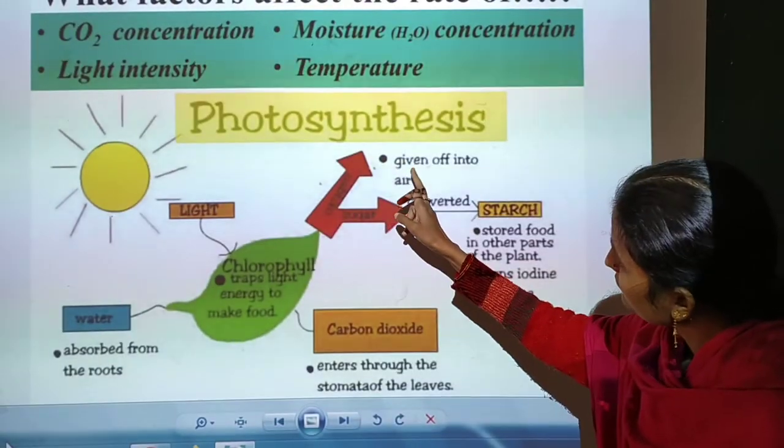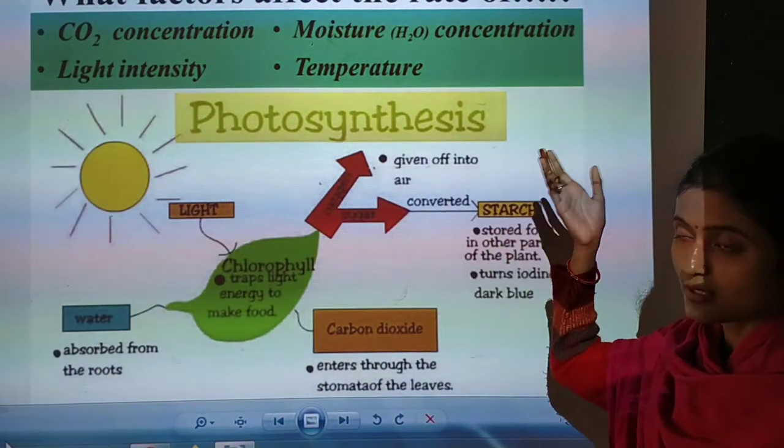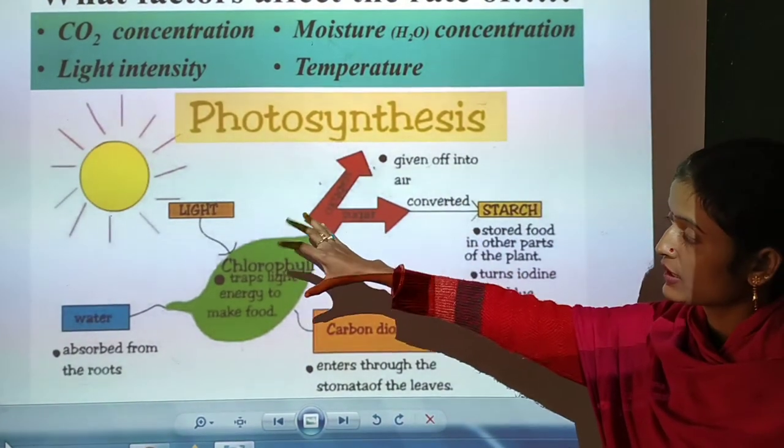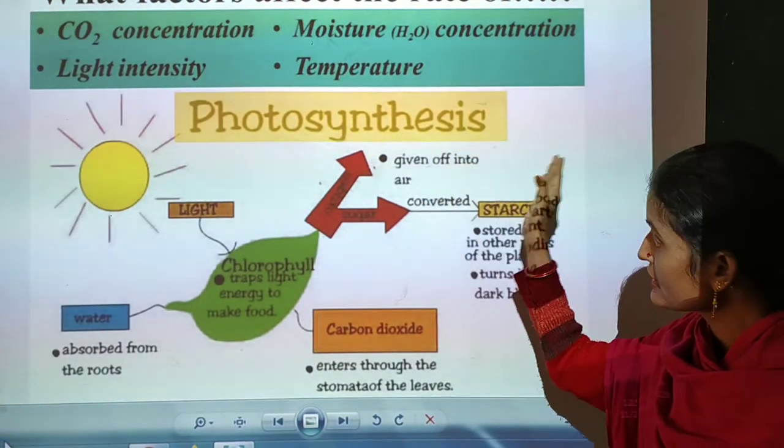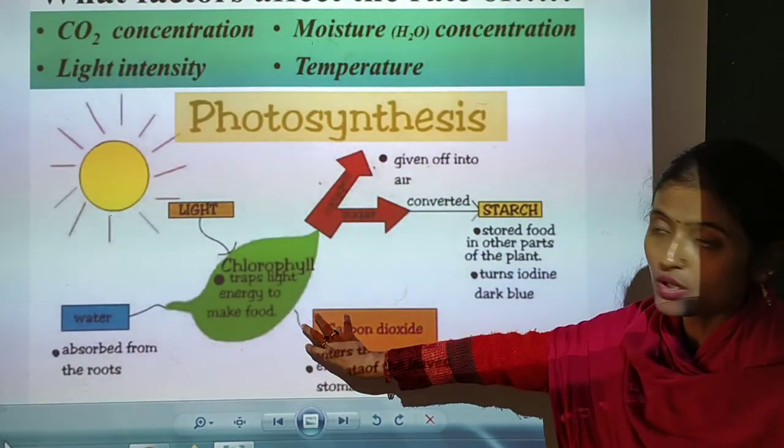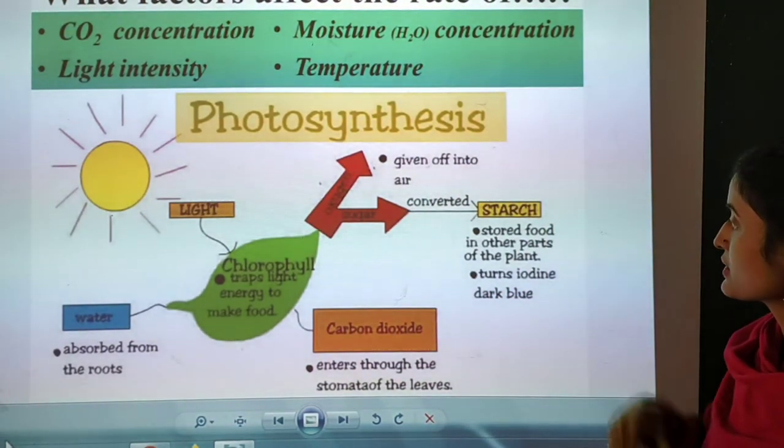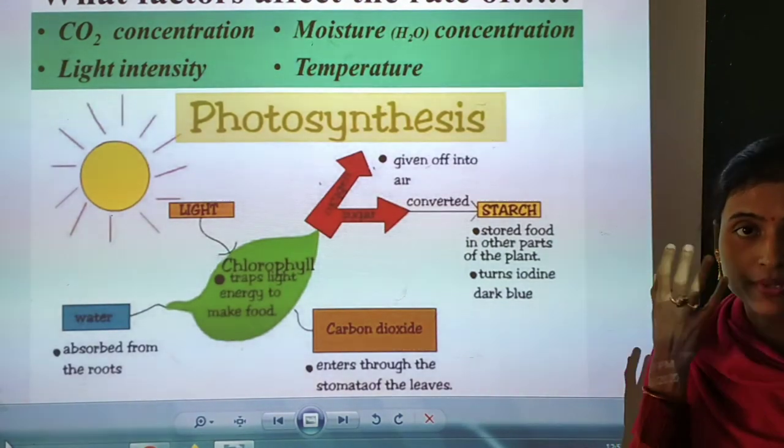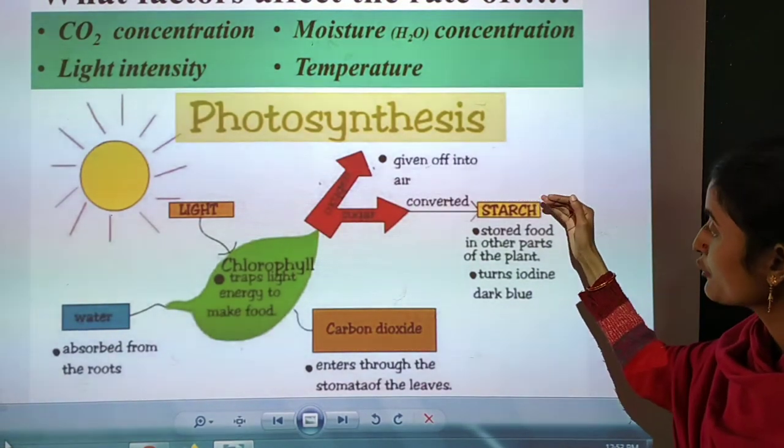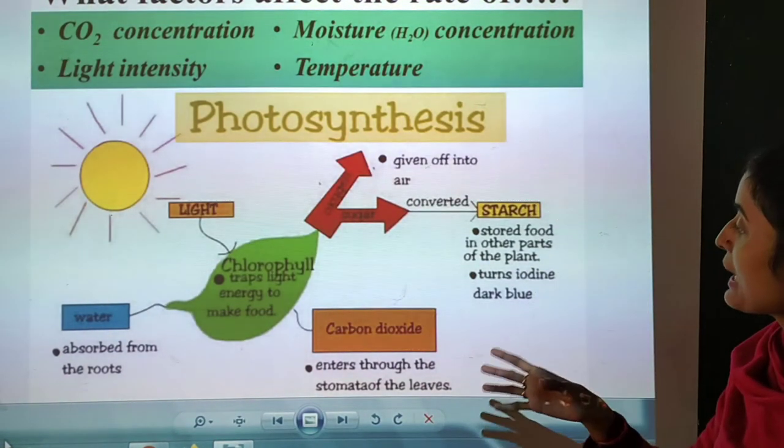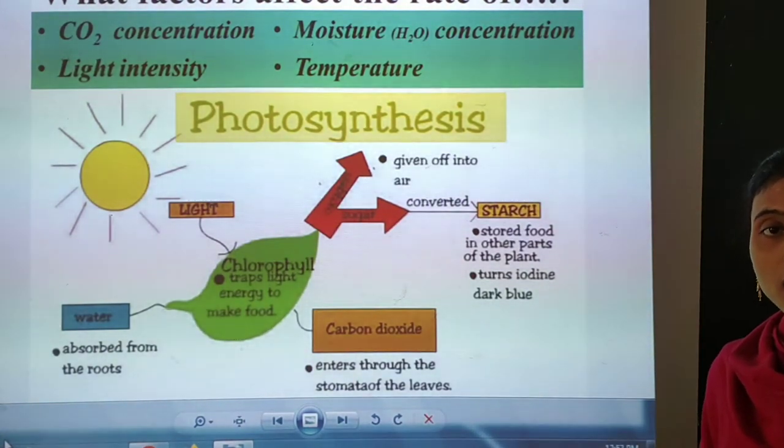given off into the air - it means which air? Oxygen is removed after the mixture of carbon dioxide and water. So oxygen is released, and this kind of component is converted into starch. The starch. And what is starch? The starch is present in a form of food, and it is stored food in the other part of the plant. And it turns iodine dark blue.